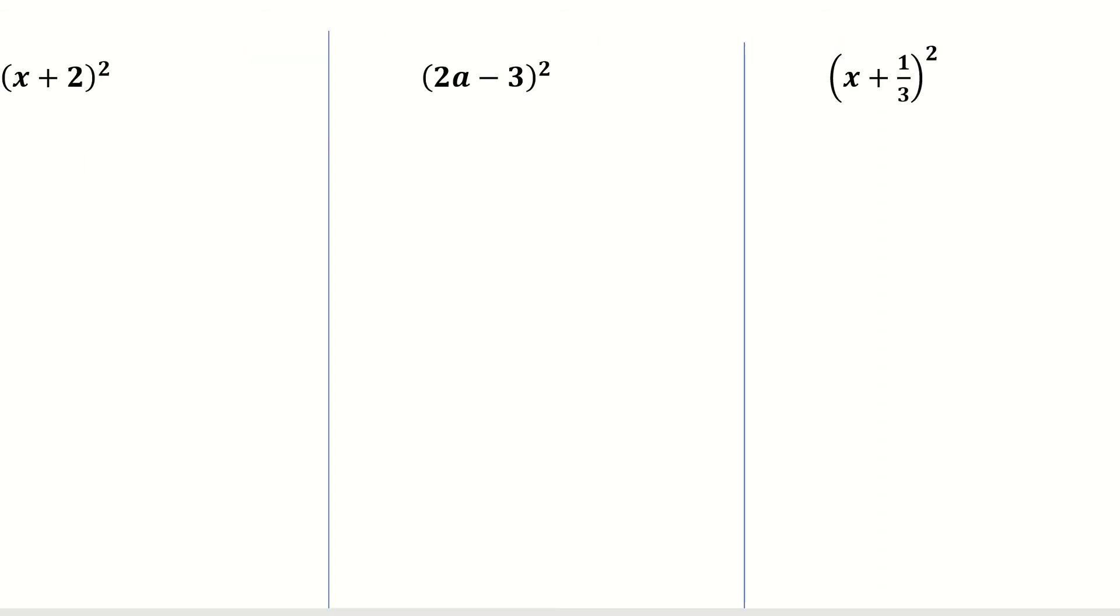This question is asking us to square x plus 2. Now just remember what squared means. Squared basically means you're multiplying something by itself. So if I gave the sum 5 squared, that's the same as 5 multiplied by 5, which is 5 in one bracket, 5 in the other. So if I'm squaring x plus 2, it's basically asking me to multiply x plus 2 by x plus 2. That's what the question is asking us to do.